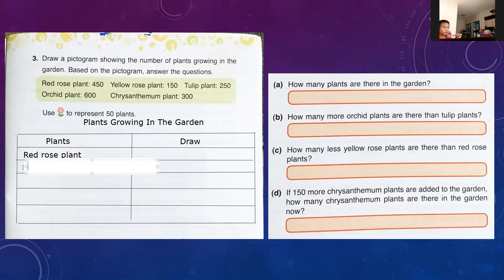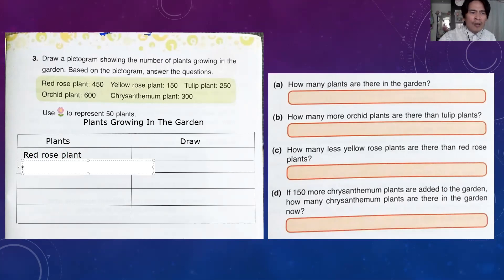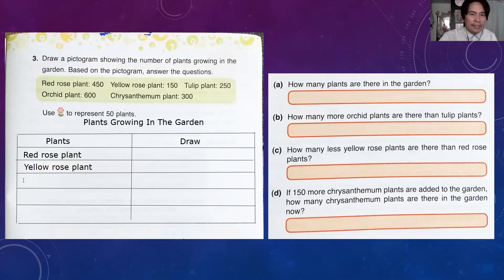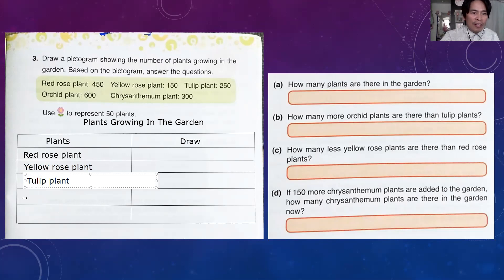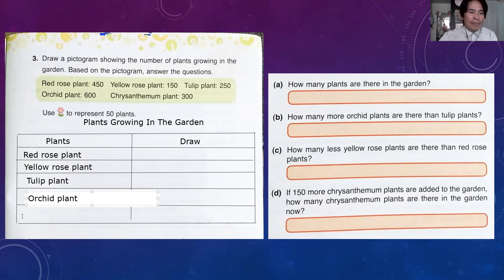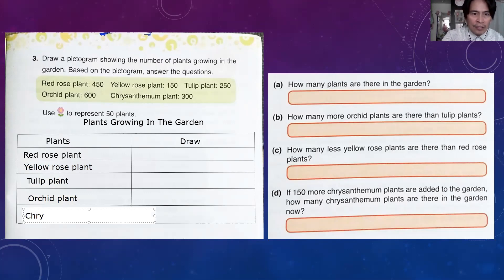The second plant is up to you. Red rose, and then yellow rose plant. My third is tulip plant, my fourth is orchid plant, and my last flower plant is chrysanthemum — C-H-R-Y-S-A-N-T-H-E-M-U-M.